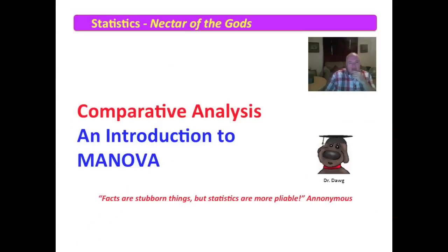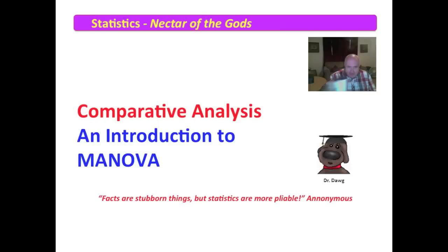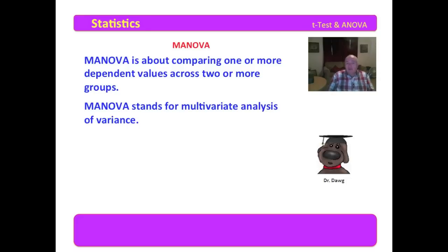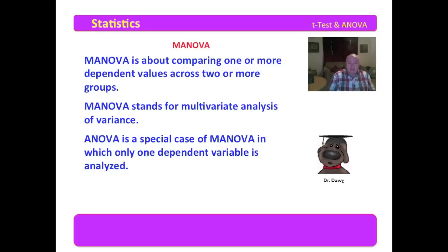Hello, my friends. We're about to launch our inquiry into MANOVA. It's a beautiful morning here in Texas today. MANOVA is about comparing one or more dependent variables across two or more groups. MANOVA stands for Multivariate Analysis of Variance, and ANOVA is a special case of MANOVA.